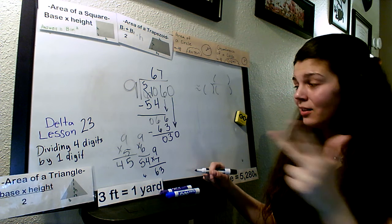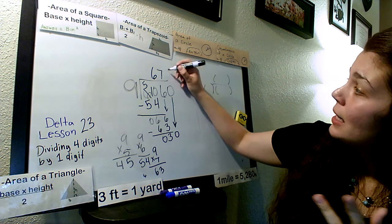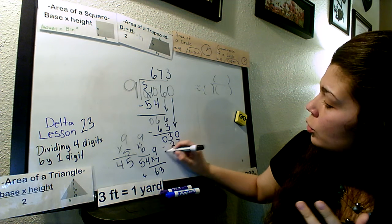36 is too high. We can't do 36. So, 9 times 3 was what? 9, 18, 27. Our 3 goes right here. Minus 27.